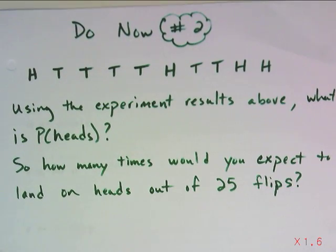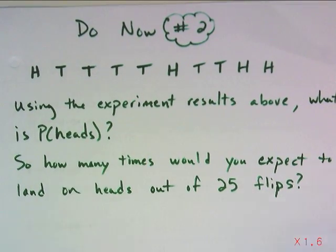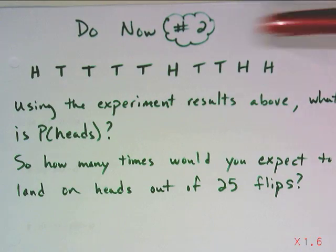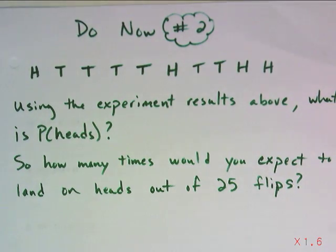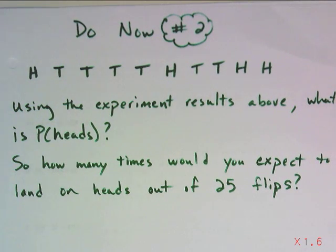Alright, your last do now. At the top, I've got some experimental results. I was flipping a coin and I recorded what I got every time. That's what all these H and Ts are for, heads and tails. So using those experimental results, what is the probability of landing on heads? Then take that probability and extend it. Tell me how many times I would expect to land on heads if I flipped the same coin 25 times. Pause now.